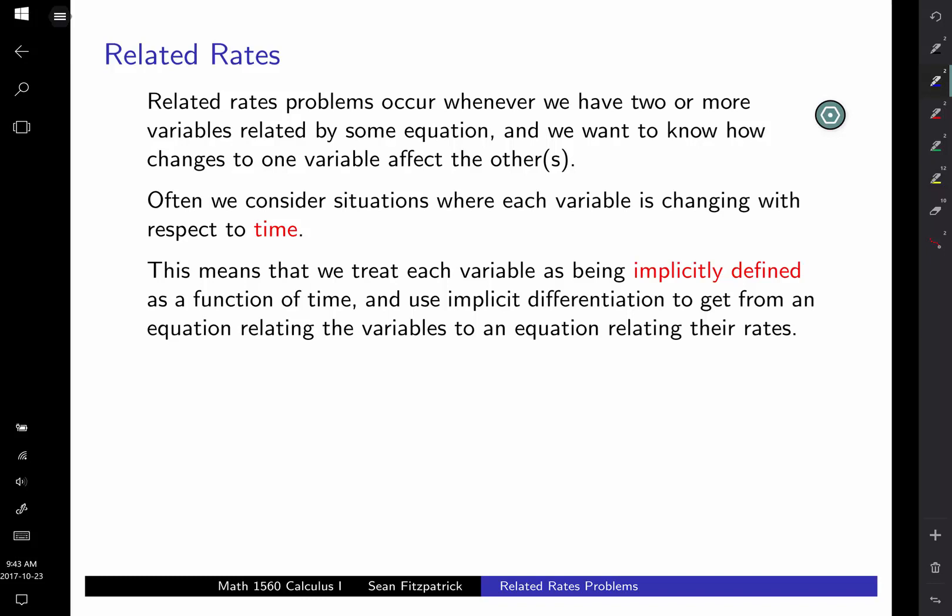And you have the relationship between his distance from the lamppost and the length of his shadow. And so by using implicit differentiation, you're going to be able to figure out the rate at which the length of his shadow is changing in terms of the rate at which his position is changing as well as the actual values of his position and the length of the shadow.